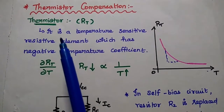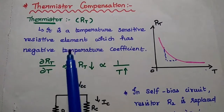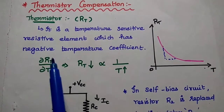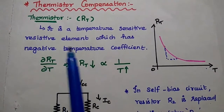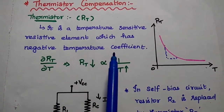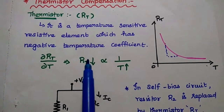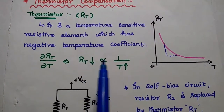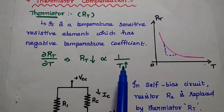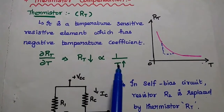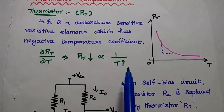Let's start with thermistor compensation technique. What is a thermistor? It is a temperature sensitive resistive element which has a negative temperature coefficient. What is negative temperature coefficient? The resistance value decreases exponentially with increasing temperature. This is the relationship — it is inversely proportional in exponential terms.